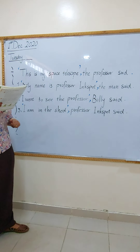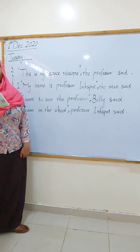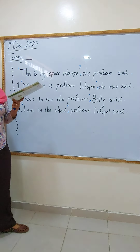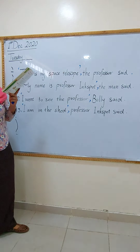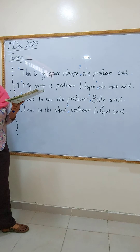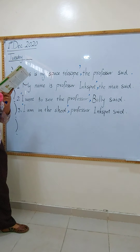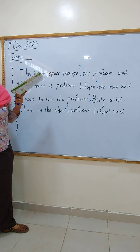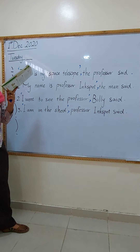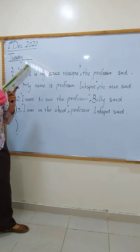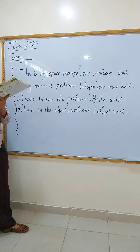Go down to number four and five — do them yourself. Number four: 'Your machine looks good,' he said. Where do I have to put the comma and where do I have to put the quotation marks? Number five: 'Don't touch it,' the professor said.